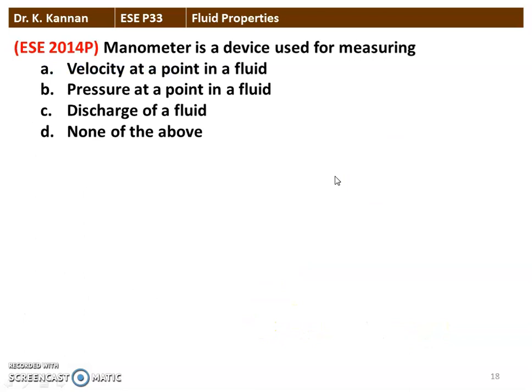The next question is from the 2014 question paper. A manometer is a device used to measure: velocity at a point in the fluid, pressure at a point in the fluid, discharge of the fluid, or none of the above. The correct answer is that a manometer is used to determine the pressure of the fluid at a point.